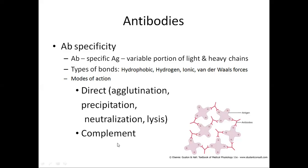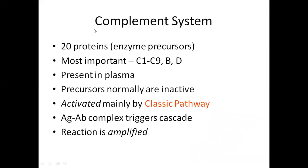The complement system is the indirect method of action of antibodies. The complement system consists of 20 precursor enzymes, but only 9 are active. The most important are C1 to C9 and the proteins B and D. It is present in the plasma. Normally these precursors are present in inactive form and are activated by the classical pathway.